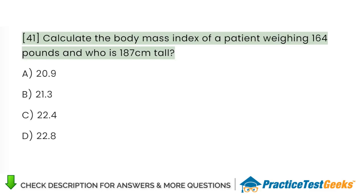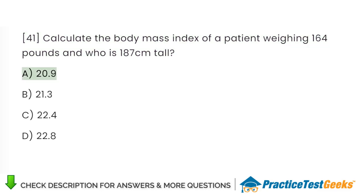Calculate the body mass index of a patient weighing 164 lbs and who is 187 cm tall. A. 20.9. B. 21.3. C. 22.4. D. 22.8.